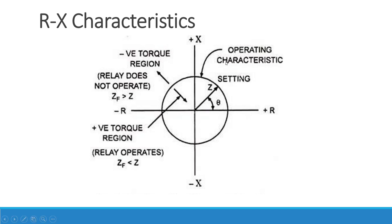When converting from the VI characteristics to the RX characteristics — the RX plane — for the same slope on the VI characteristics you get a circle with the radius equal to Z, which is the setting impedance. Inside the circle you have the positive torque region where the fault impedance is less than the setting impedance Z, and the negative torque region is outside the circle where the fault impedance is greater than Z. When a fault occurs outside the circle the relay will not operate, and when the fault occurs within the circle the relay will operate.